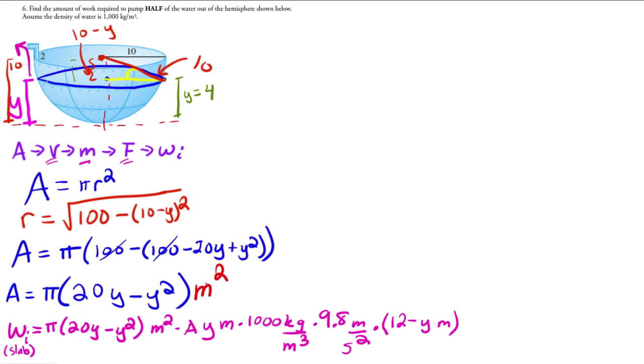So 12 minus 4 is going to be 8. So that works. So that's the explanation for that guy.